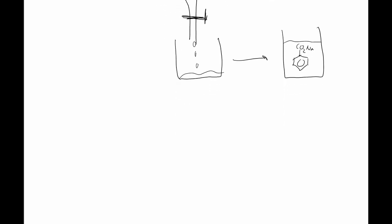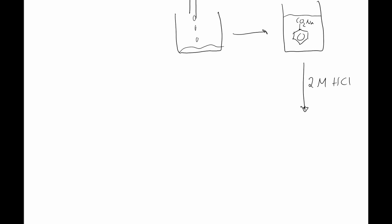To obtain the pure benzoic acid, you simply have to add an acid — for example, two molar hydrochloric acid solution. This will protonate the benzoic acid, thus decreasing its polarity, so that solid benzoic acid would start to crystallize from solution. This can then be filtered off, washed, and recrystallized from a suitable solvent, for example boiling water.